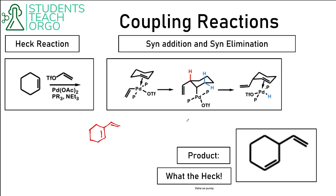If you have something sticking off a ring going straight up, that's axial. If something sticks off at an angle, that's equatorial. Going back to the Heck reaction cycle, a really important step is the ligand de-insertion step, where we're moving a hydrogen from the ligand to the metal — that's what makes it ligand de-insertion.